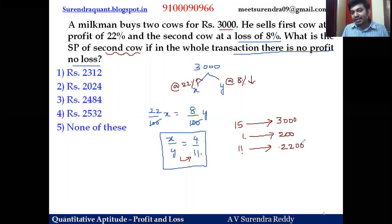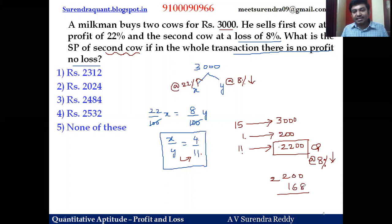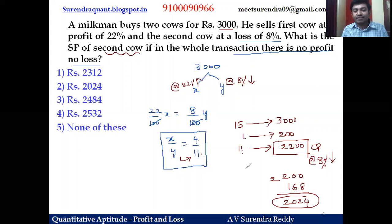The CP of the second cow is 2200 rupees, but it is being sold at an 8 percent loss. Ten percent of 2200 is 220; one percent is 22; eight percent is 8 times 22 equals 176. So from 2200, subtract 176: the selling price of the second cow is 2024 rupees.